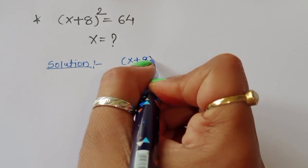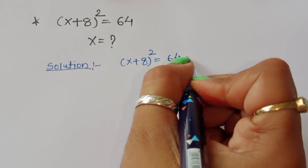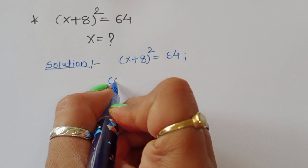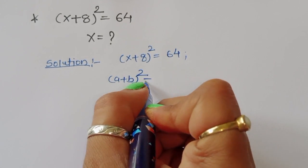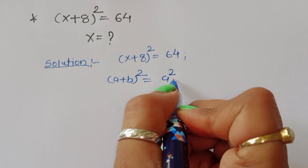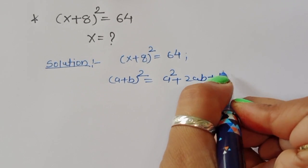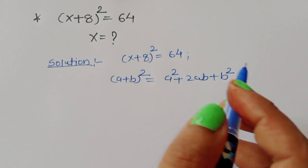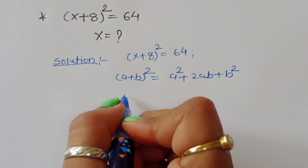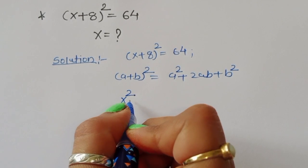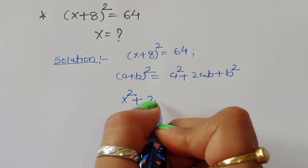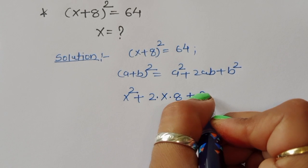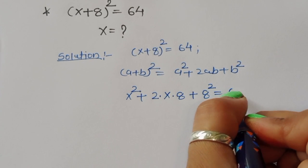x plus 8 whole square is equal to 64. This is a formula of (a + b) whole square, so we can say a plus b whole square is equal to a square plus 2ab plus b square. Here a is x and b is 8, so we can write x square plus 2 times x times 8 plus b square, which is equal to 64.